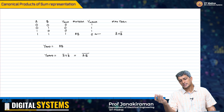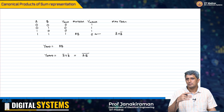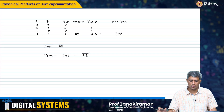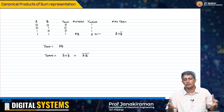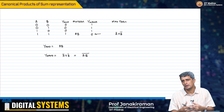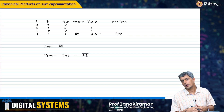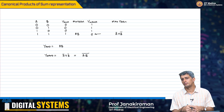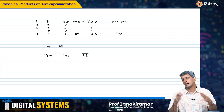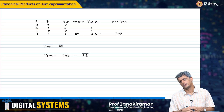So, with this you can implement any arbitrary Boolean function that is given to you. That usually comes from the spec of a product — you want to do a particular task, get the truth table, and proceed from there. In the next lecture, we will look at alternate Boolean simplification techniques — instead of doing this by hand, we will look at what is known as the Karnaugh Map technique. Thank you.